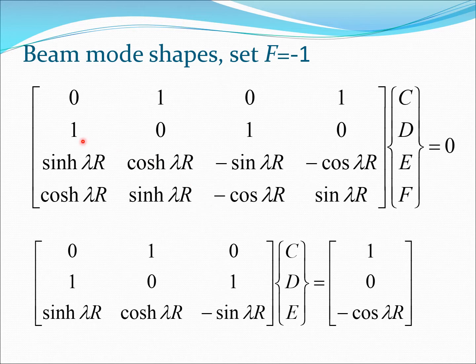So here that becomes d and because f is minus 1 we get the 1 on the right hand side. Similarly the next equation becomes c plus e is 0 and the third equation becomes sinh lambda r into c plus cosh lambda r into d minus sin lambda r into e plus cos lambda r equal to 0.